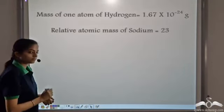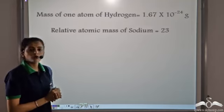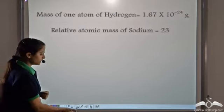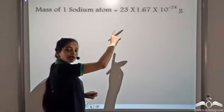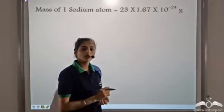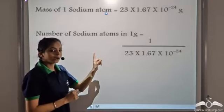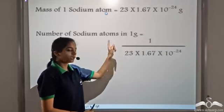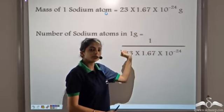Now let's look at sodium. The relative atomic mass of sodium is 23. The mass of one atom of hydrogen is 1.67 × 10⁻²⁴ grams, so the mass of one sodium atom equals 23 times the mass of one hydrogen atom, which is 23 × 1.67 × 10⁻²⁴ grams. So the number of sodium atoms in one gram equals 1 divided by that number.